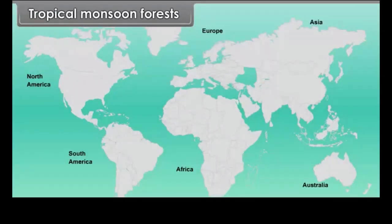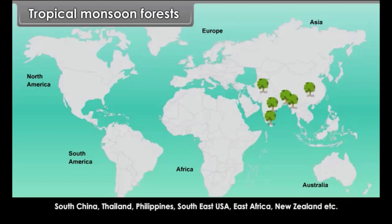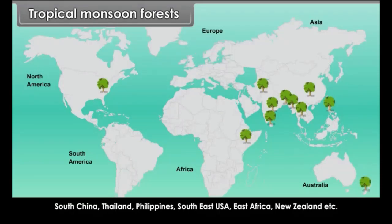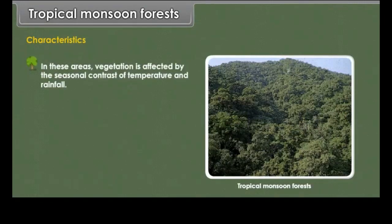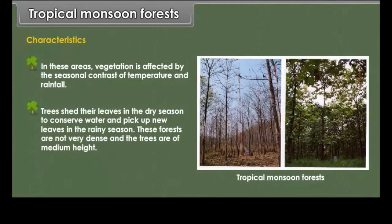Tropical Monsoon Forests are found in India, Pakistan, Sri Lanka, Bangladesh, Myanmar, South China, Thailand, the Philippines, Southeast USA, East Africa and New Zealand. In these areas, vegetation is affected by the seasonal contrast of temperature and rainfall. Trees shed their leaves in the dry season to conserve water and pick up new leaves in the rainy season. These forests are not very dense and the trees are of medium height.